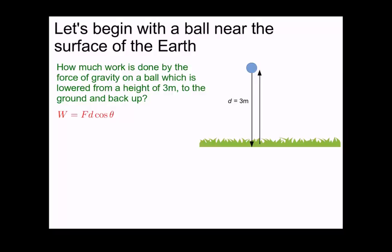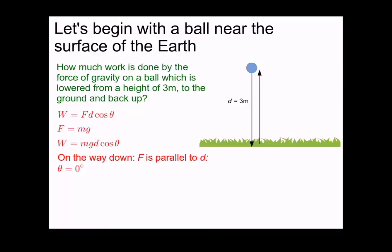Work is always defined as the force of interest times the displacement times the cosine of the angle between the force and the displacement. In this case, the force we're interested in is gravity, mg, so the work done is mgd cosine theta. On the way down, the force is parallel to the displacement — the ball is moving down and the force is down — so the angle between the force and the displacement is 0 degrees. The cosine of 0 degrees is positive 1, so the work done by gravity as the ball travels down is positive mgd.